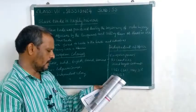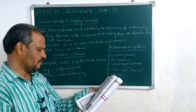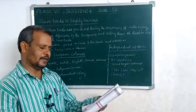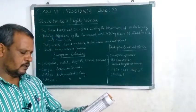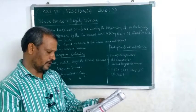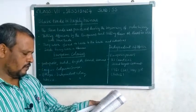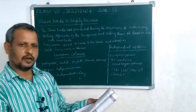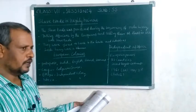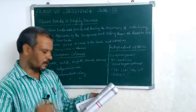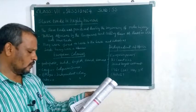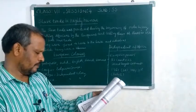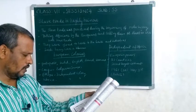Europeans started halting at the ports of Africa. Slowly, Portuguese, Dutch, English, Germans, and French gained a foothold in the interior parts and colonized the area. They occupied and colonized the African countries. By the close of the 19th century, the map shows the regions colonized by European powers.